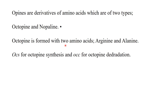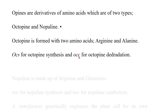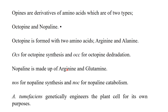Octopine is formed from two amino acids: arginine and alanine. The genes responsible are OCS for octopine synthesis and OCC for octopine catabolism. Nopaline is made up of arginine and glutamine. The genes for nopalines are NOS for nopaline synthesis and NOC for nopaline catabolism.